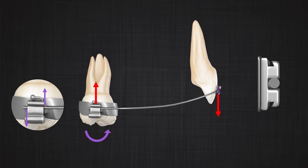As shown in this picture, the only place where a moment can counteract the couple in the wire is at the molar, because that is the only location with two contact points. If you use 0.018 instead of NiTi — still a rigid wire in the same configuration — you will have exactly the same force system; only the magnitude of the forces increases because the wire's rigidity is higher. If you use 0.020, the magnitude increases even further.